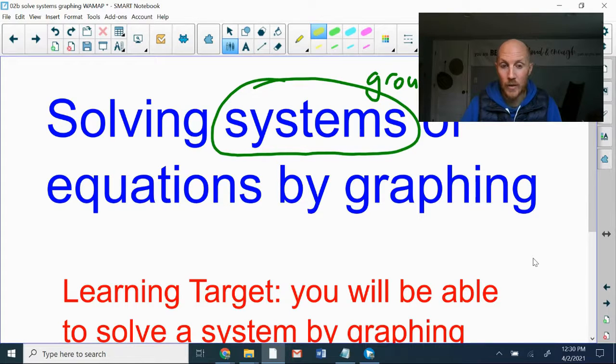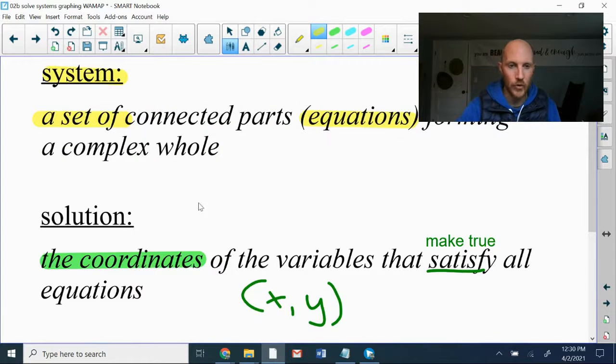And solving, the first word in the title, that means we're trying to find the solution. And we had both of these as vocabulary words yesterday. The solution refers to the coordinates of the variables that satisfy all the equations. So both the X and the Y coordinate. And the way we see that on the graph is we look to see where those two lines cross. Get the coordinates of that point. That is the solution.